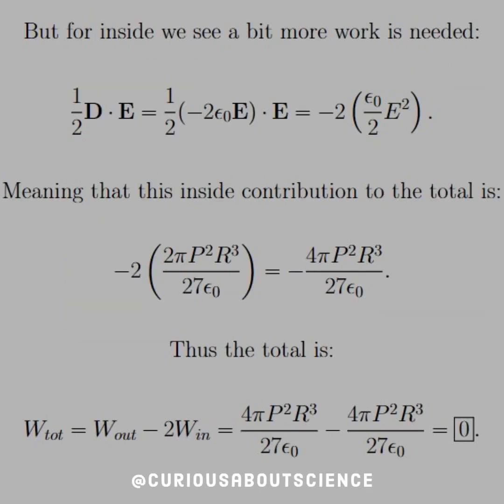But the inside, we need a little more work. So, one-half of D dot E is equal to negative 2 times epsilon naught over 2 E squared. Note that that negative 2 will come into play soon. We see that the epsilon naught over 2 E squared is the same as the inside integral from before. And so, we can substitute that into the parentheses, which is why we factor the negative 2 out. And we see that we're left with negative 4π P squared R cubed over 27 epsilon naught.